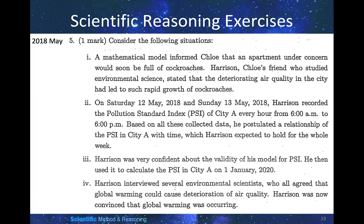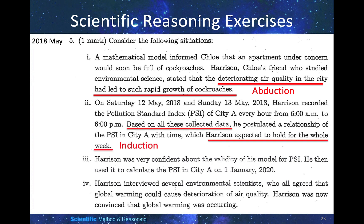May 2018. A mathematical model informed CO2 that an apartment under concern would soon be full of cockroaches. Harrison, CO2's friend who studied environmental science, stated that the deteriorating air quality in the city led to such rapid growth of cockroaches. This is obviously a guess, so it is abduction. On Saturday and Sunday, May 12–13, 2018, Harrison recorded the PSI of the city every hour from 6am to 6pm. Based on these collected data, he postulated a relationship of PSI with time, which he expected to hold for the whole week. This is induction, because based on a small amount of data he postulated what would happen in general.